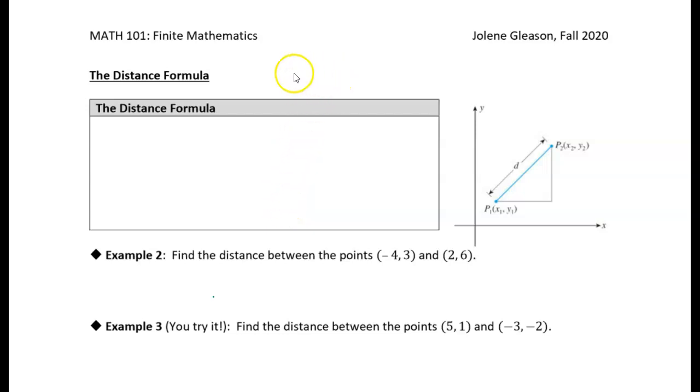When we have two points on a number line, it's pretty easy to find the distance between them. Let's say this is zero and we have a point at two and another point over here at six. We can find the distance between these two points just by subtracting six minus two gives us four. So the distance between these two points is four units.